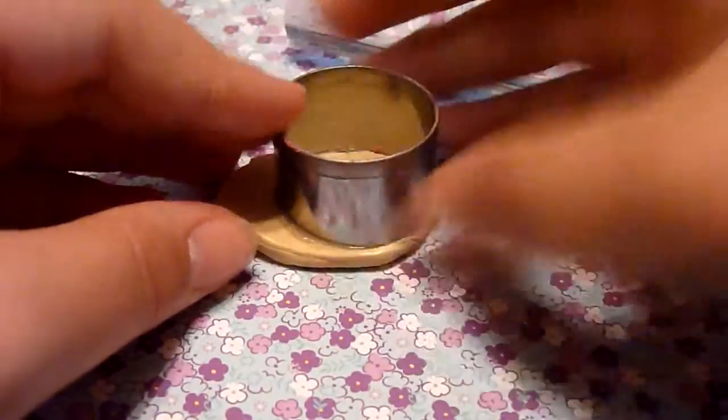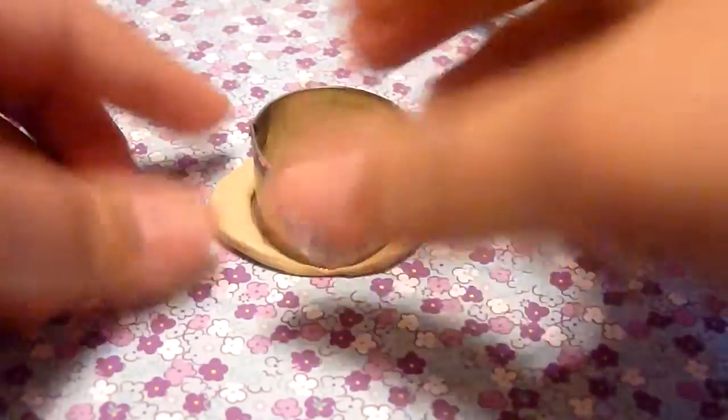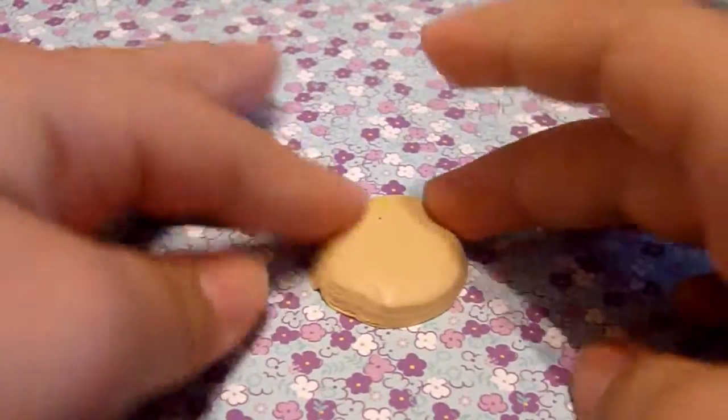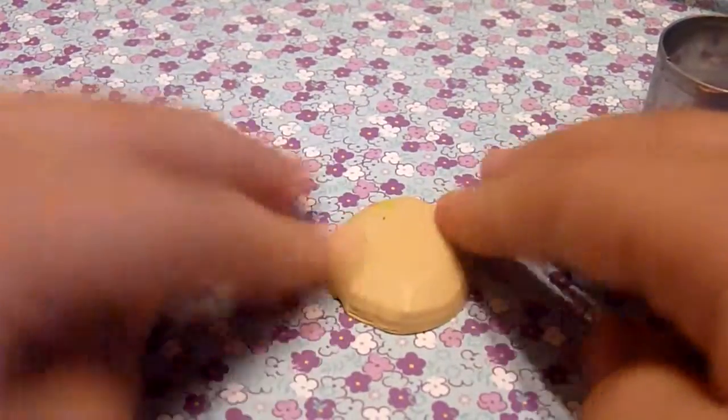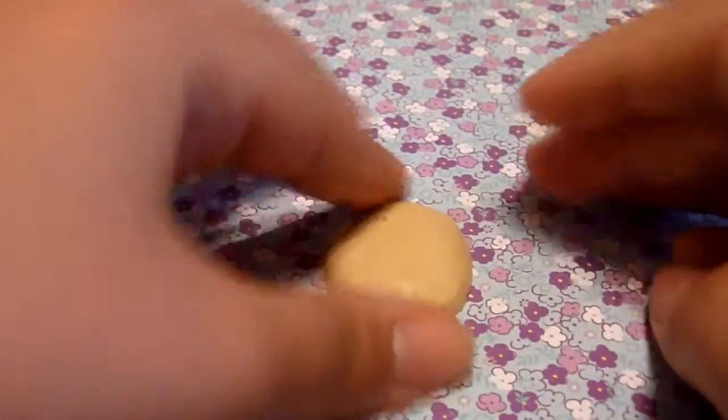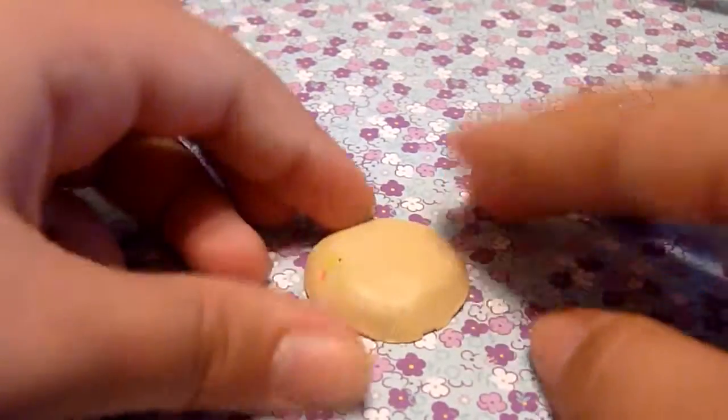And then when it's the size you want it, cut it out with your cookie cutter. I'm just going to form it into a dome shape so it doesn't look perfect, because cookies aren't perfectly shaped into a circle. So I'm just going to do that real quick.